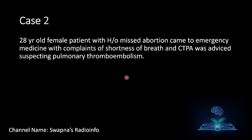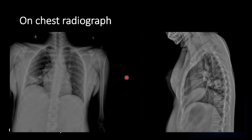Case 2: a 28-year-old female patient with a history of hemoptysis came to the emergency medicine with complaints of shortness of breath, and CT pulmonary angiogram was advised suspecting pulmonary thromboembolism. Initially, a chest radiograph in PA and lateral views was done, showing heterogeneous soft tissue opacity in the right lower lobe.